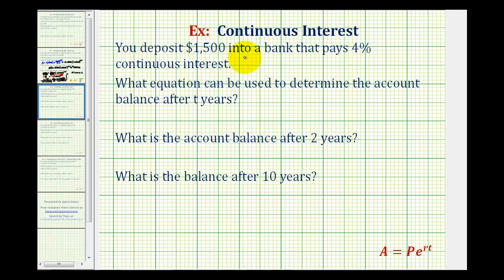You deposit $1,500 into a bank that pays 4% continuous interest. It's important that we pay close attention to the type of interest because there are different formulas for compounded interest and continuous interest.